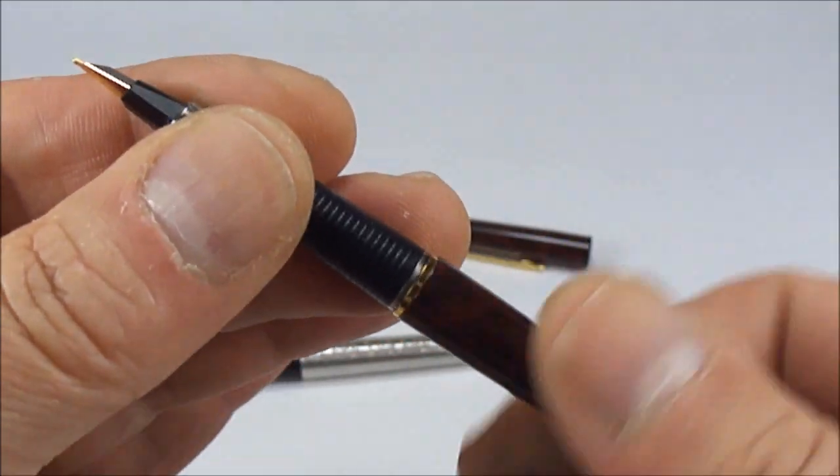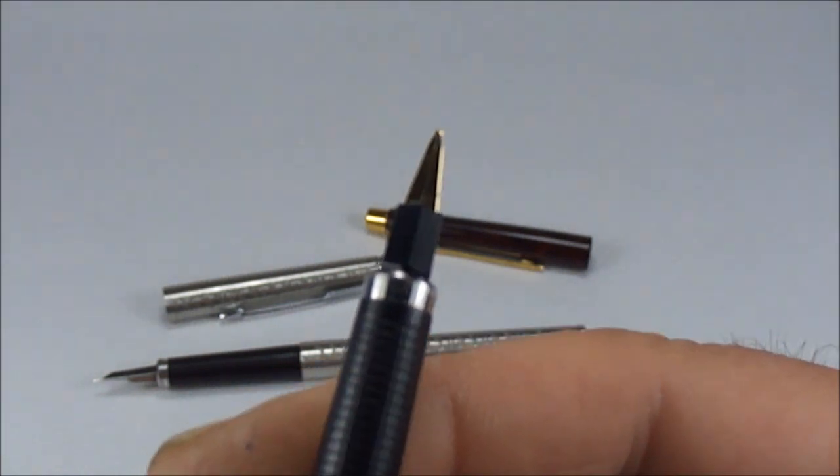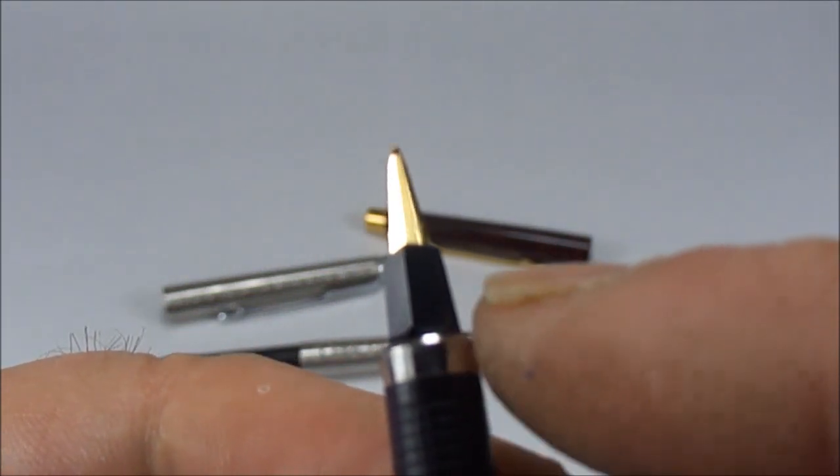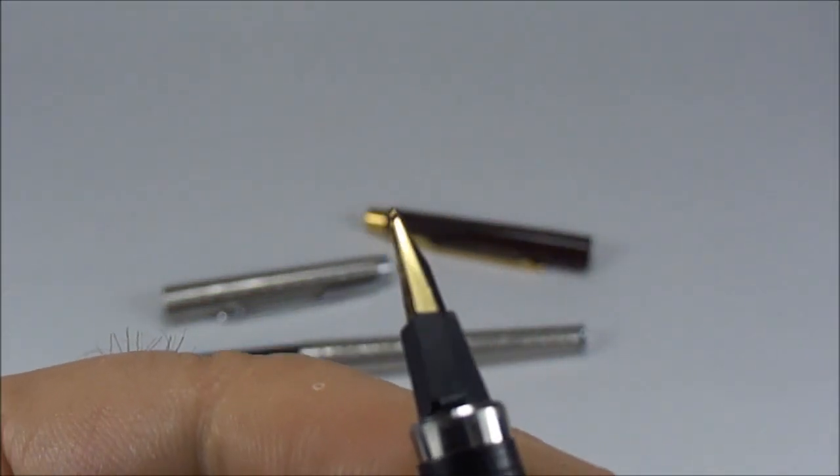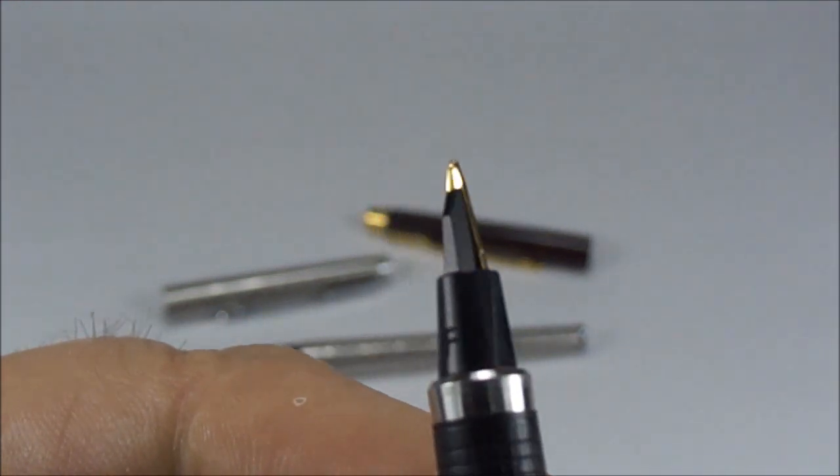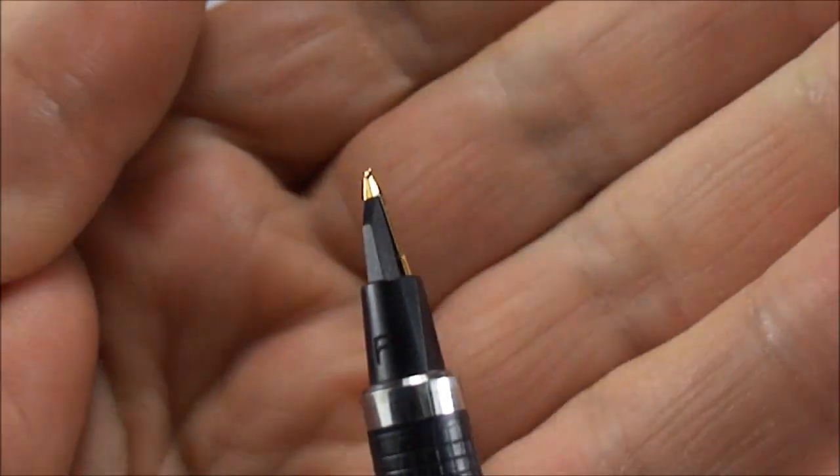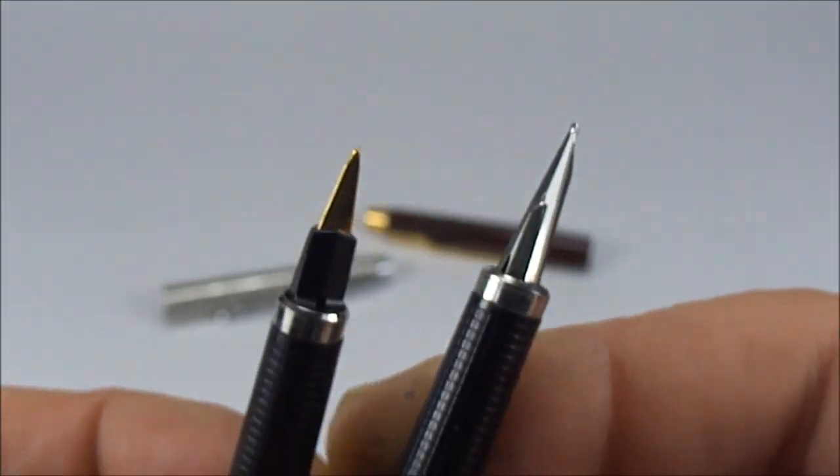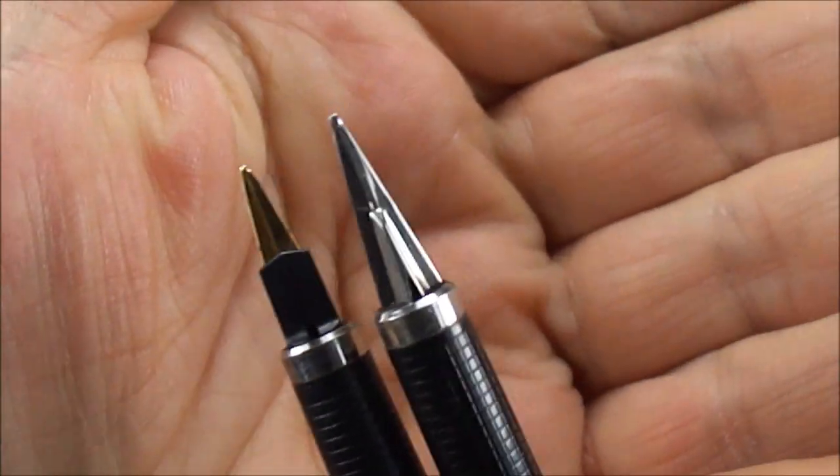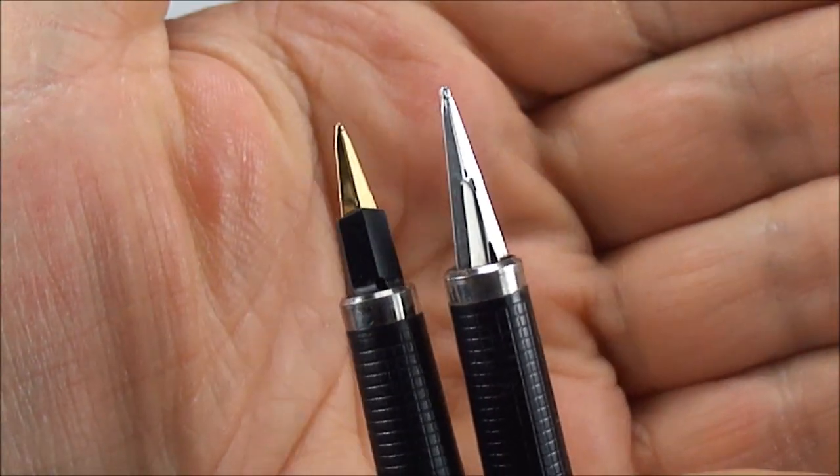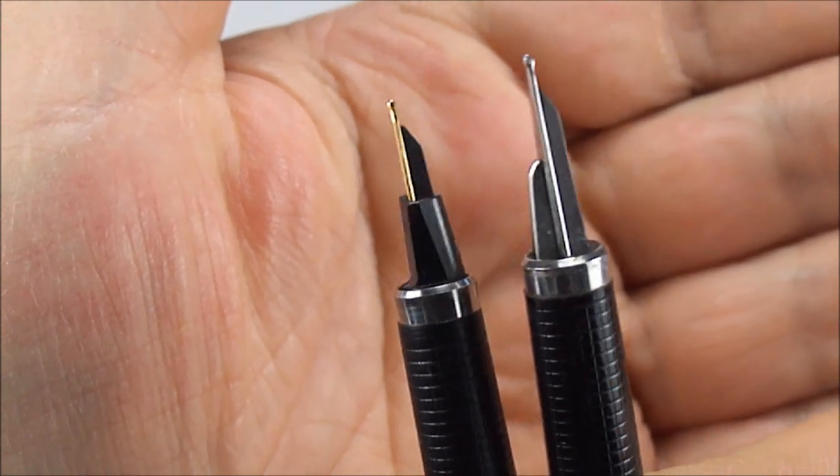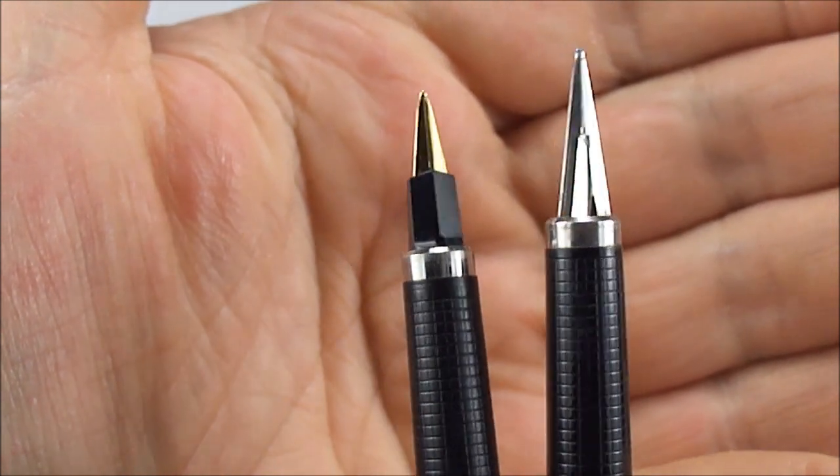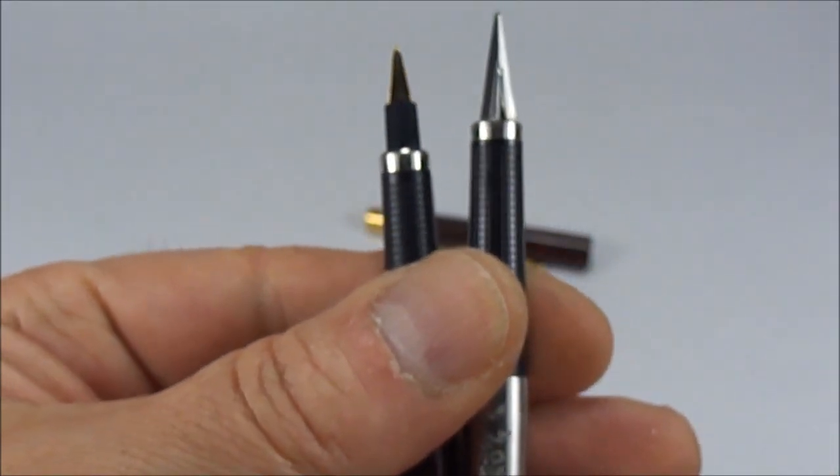Here's the nib on the Classic. You'll notice the difference - it has a black collar at the bottom. This is a gold-plated steel nib. If I turn it around, you can see the collar and the feed underneath. Let me show you the nibs together - this is why people sometimes confuse these pens.